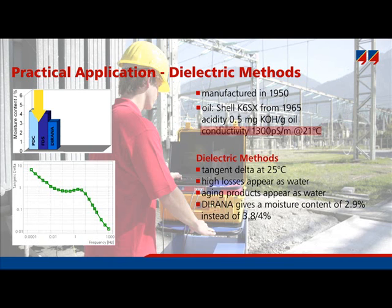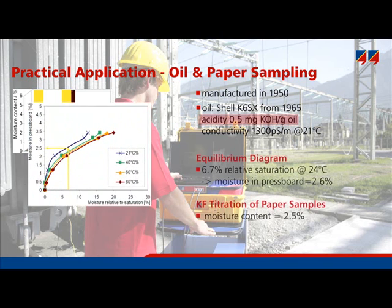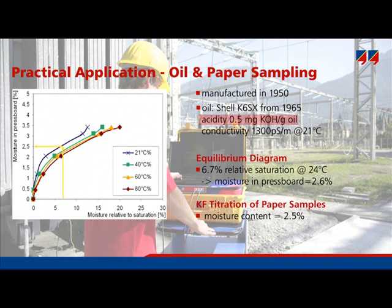Durana calculates more reliable results that are typically in a similar range to those from the paper samples taken from the transformer. Unfortunately, aging makes the application of the old equilibrium diagram based on PPM moisture content impossible, as it causes the equilibrium curves to shift towards the oil, resulting in an overestimation of the moisture content. The new equilibrium diagram based on relative saturation indicates a moisture content of 2.6%, which agrees well with the value of 2.5% derived from the paper samples and the Durana reading of 2.9%.